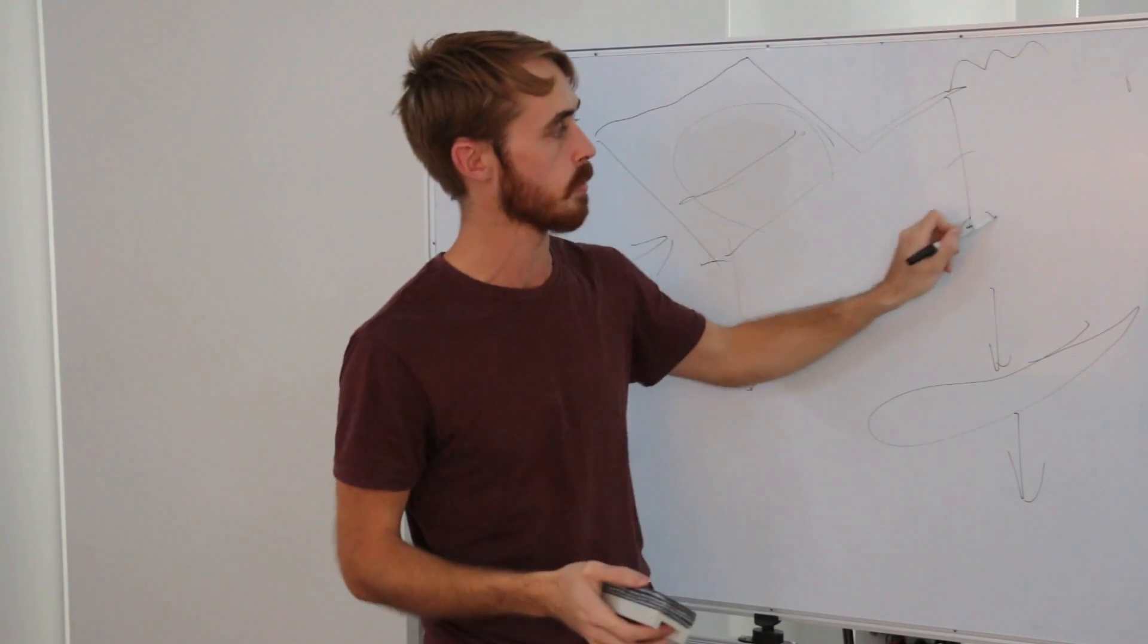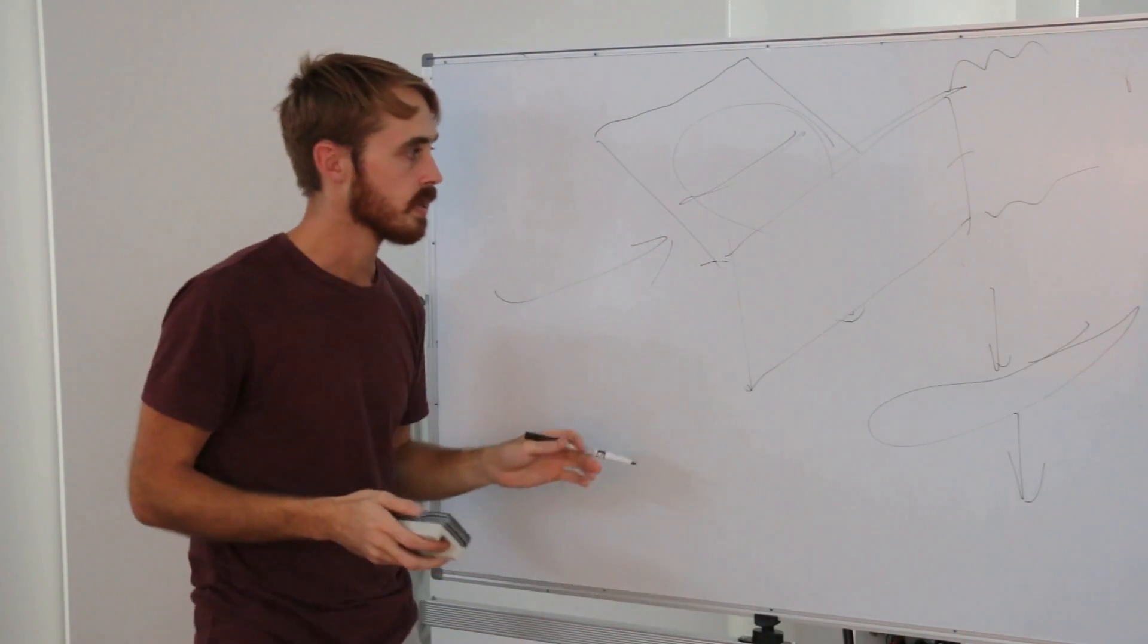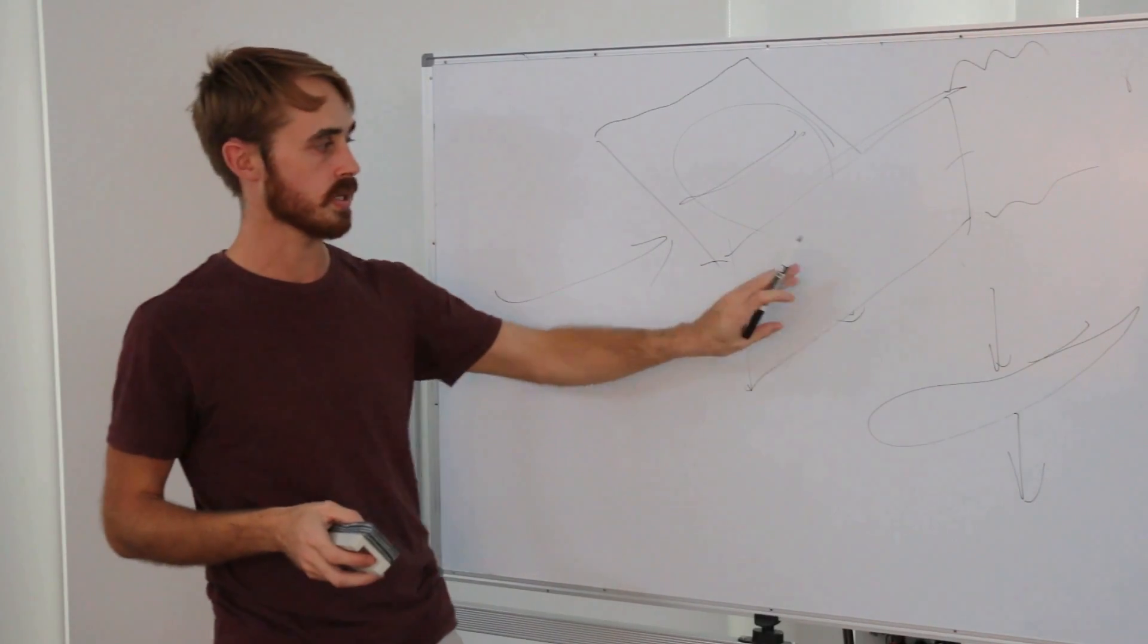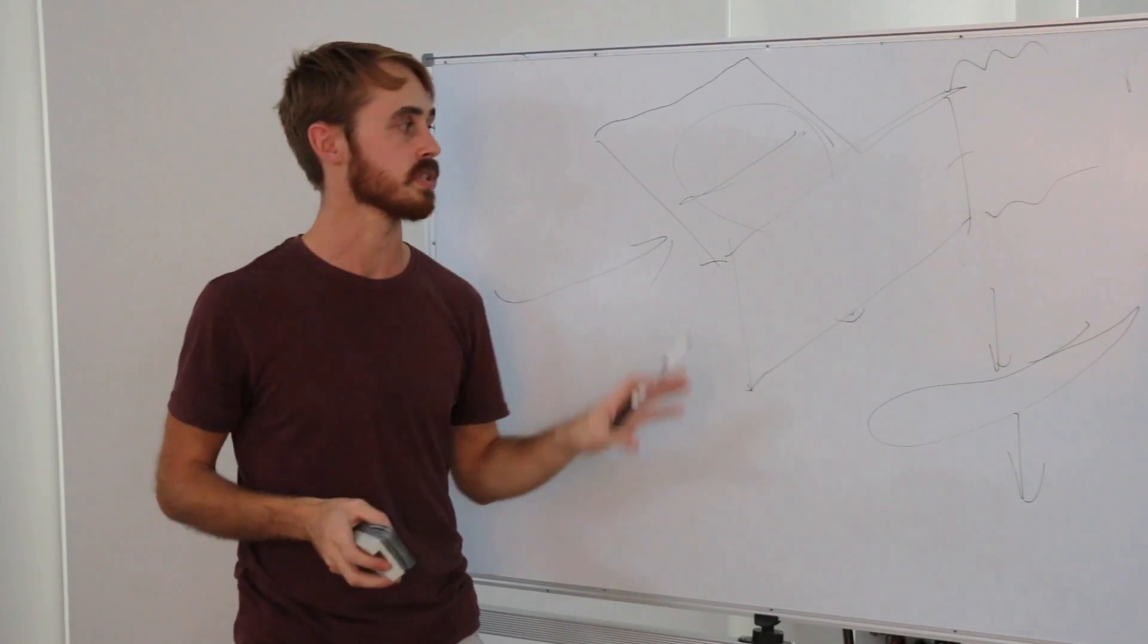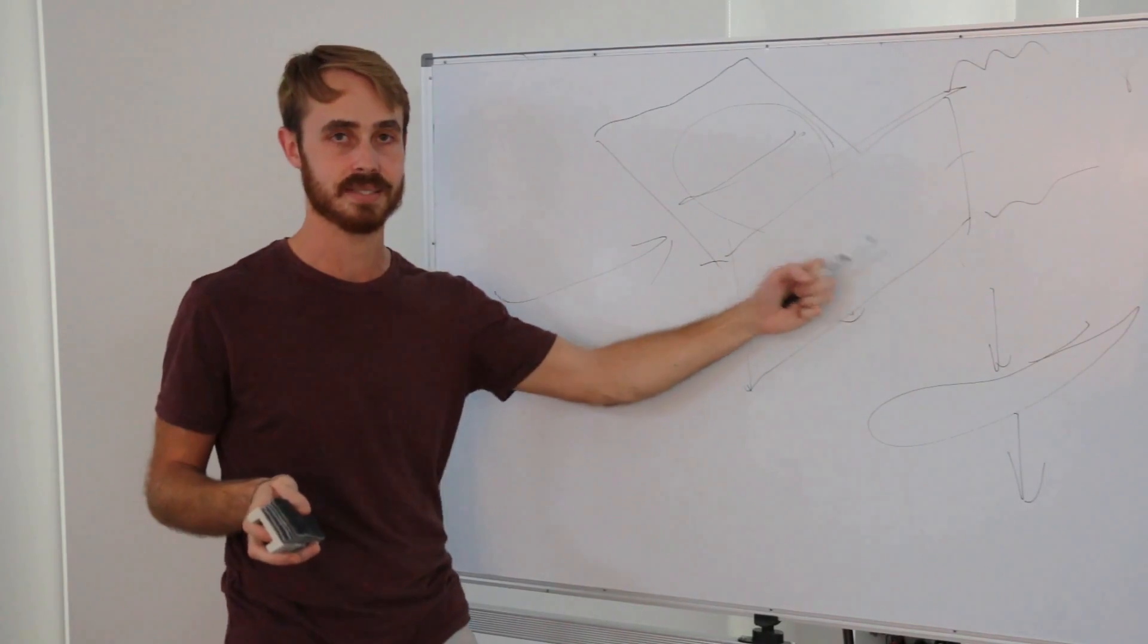You'll still get vortices off the top and the bottom of the end plate. But the important thing is that you're not going to get such a massive vortex as if there was no end plate at all. And this is the reason why end plates exist.